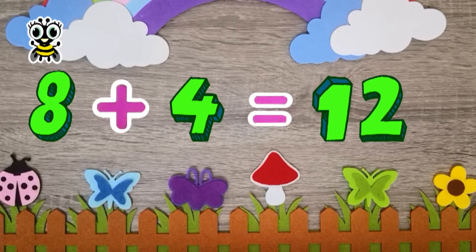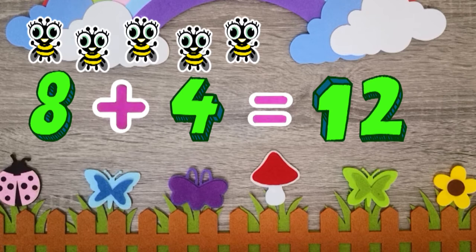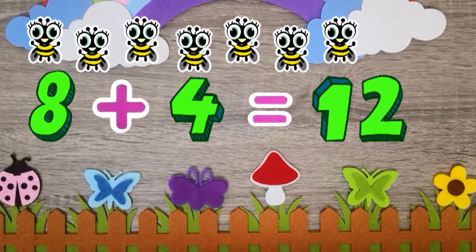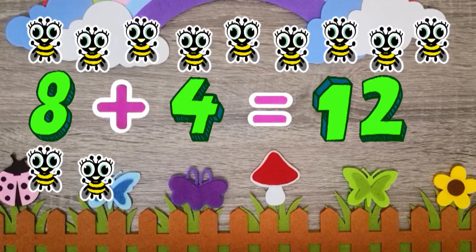8 plus 4 equals 12. 1, 2, 3, 4, 5, 6, 7, 8, 9, 10, 11, 12.